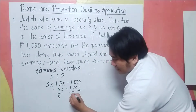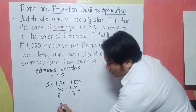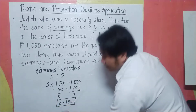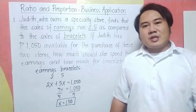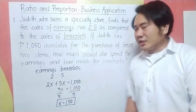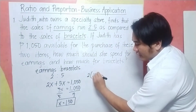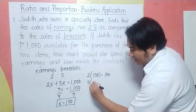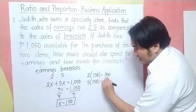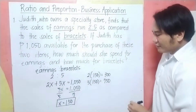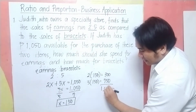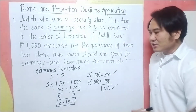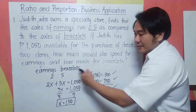We divide both sides by 7: 1,050 divided by 7 equals 150. After solving for x, we substitute back: 2x equals 2 times 150, which equals 300, and 5x equals 5 times 150, which equals 750. Therefore, Judith can allot 300 pesos for the earrings and 750 pesos for the bracelet.